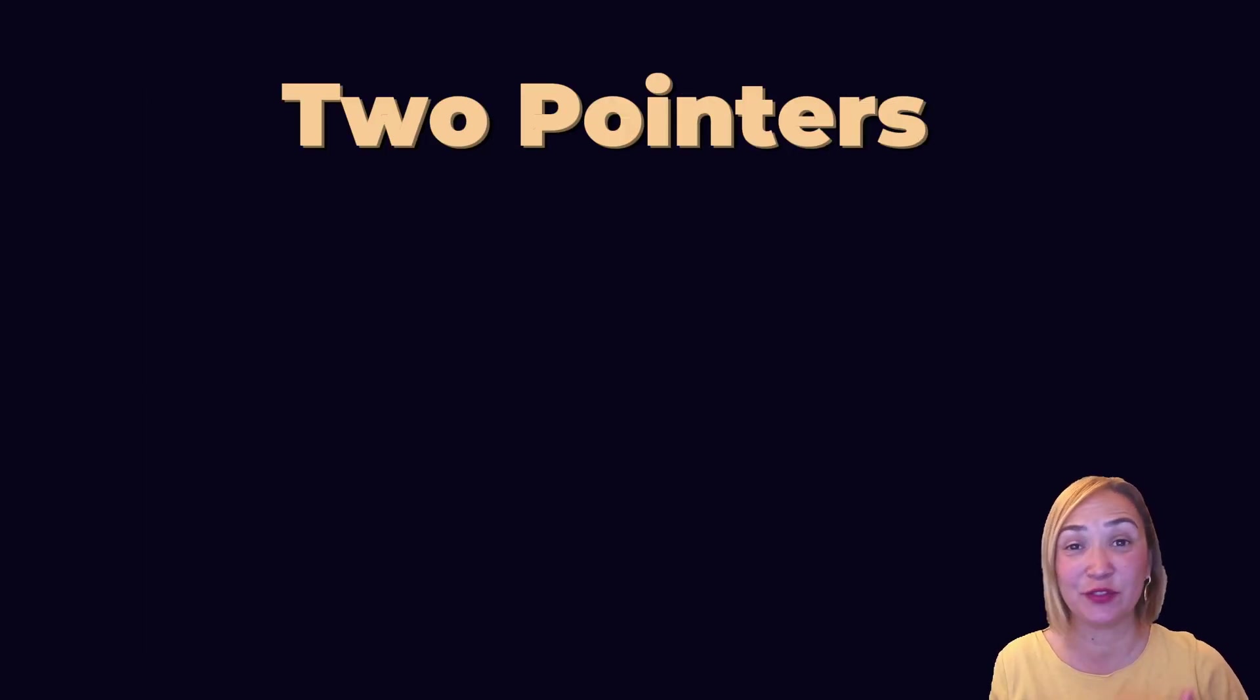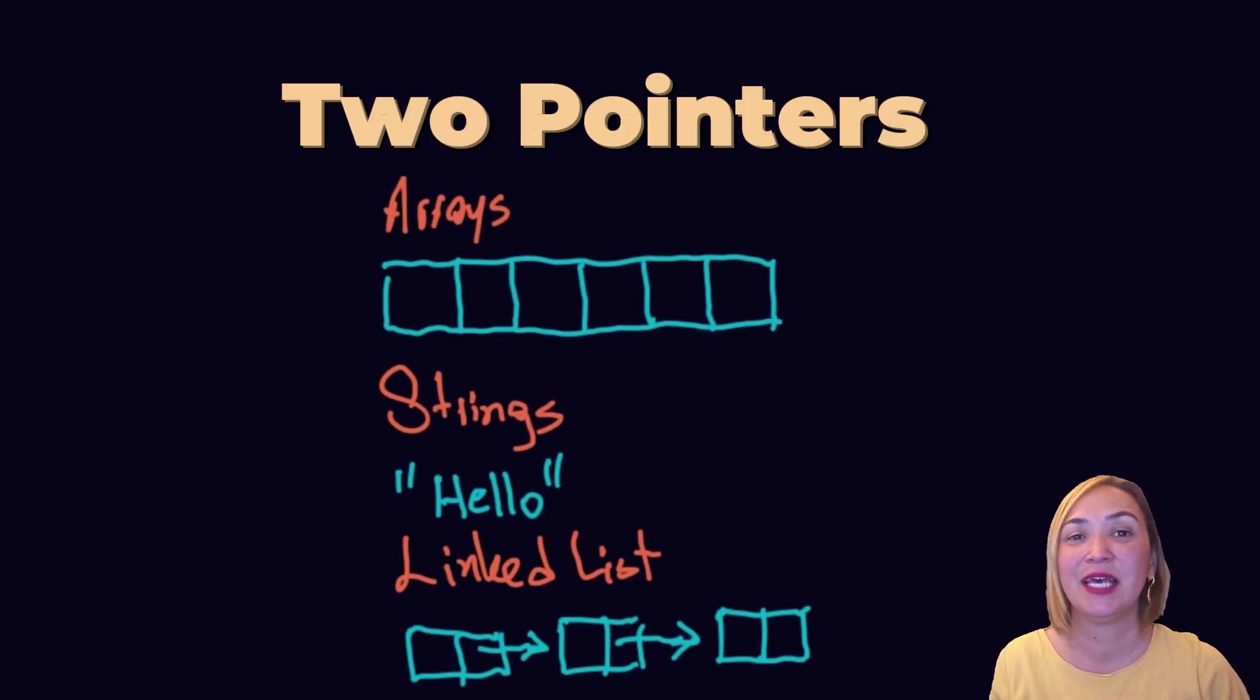Welcome to CodeVento. We are diving into two-pointer patterns. The two-pointer pattern is a smart way to work with arrays or strings by using two pointers that move in a coordinated way.